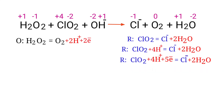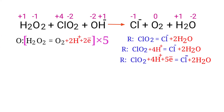The electrons lost in the oxidation half reaction must equal the electrons gained in the reduction half reaction. In the oxidation half reaction there are 2 electrons, but in the reduction half reaction there are 5 electrons. To balance them, multiply the oxidation half reaction by a coefficient of 5 and multiply the reduction half reaction by a coefficient of 2.